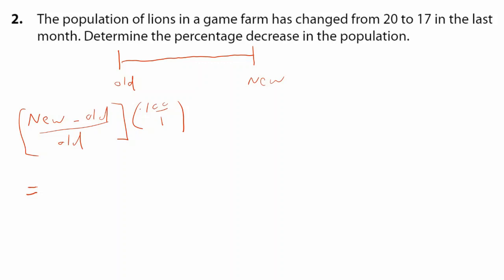Okay, so let's see what's old, what's new. The population of lions in a game farm have changed from 20 to 17. So from is the old, it was 20, to the new or the most latest, which is 17. So now we can substitute. In the place of new we have 17, we subtract the old which is 20, over the old which is 20. Multiply all of that by 100 over 1 to get the percentage.